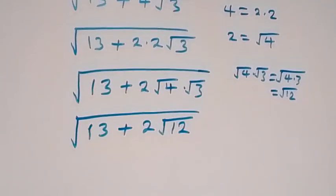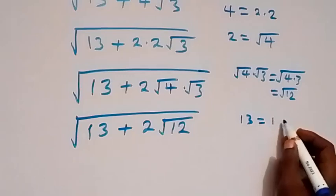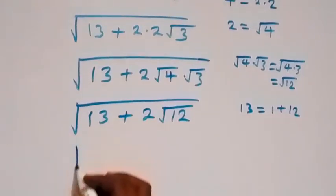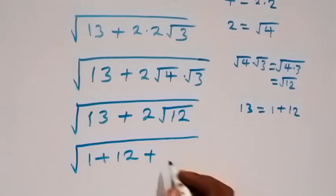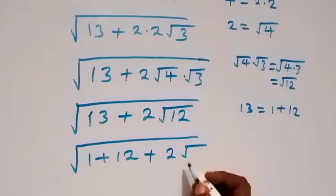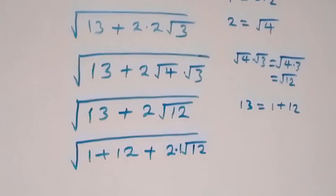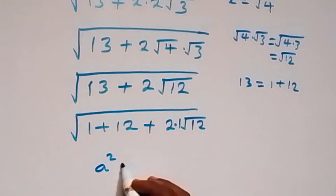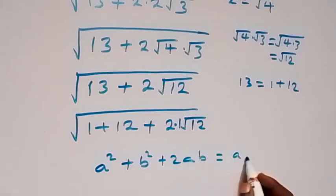From here, 13 we can write as 1 plus 12. So this becomes square root of 1 plus 12 plus 2 times root 12. Also, when we look at this format — a squared plus b squared plus 2ab gives us (a plus b) squared — we can apply this pattern here.